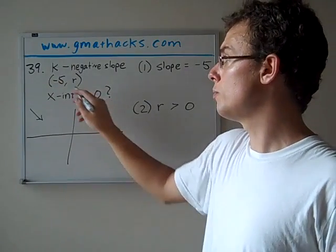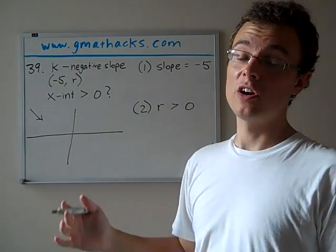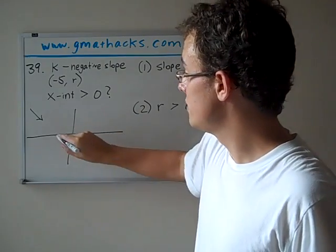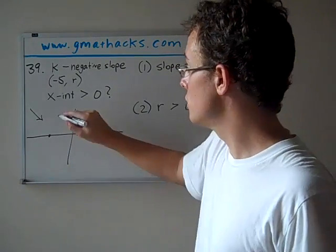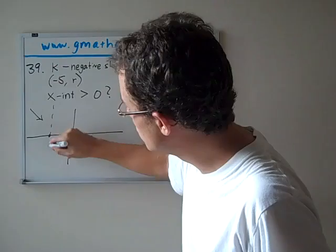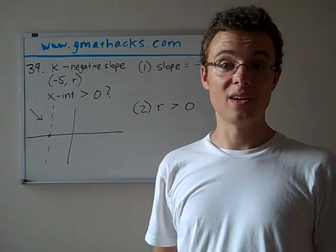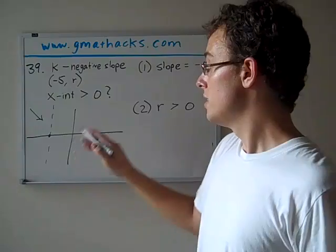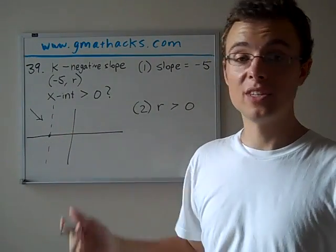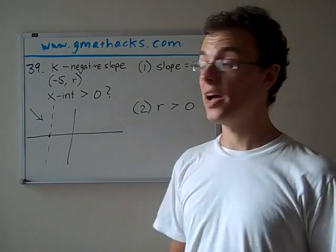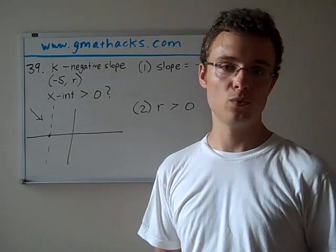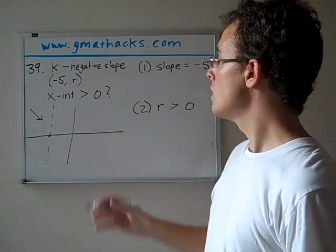We know that it passes through the point (-5, r). Now that's not giving us very much information. All it means is that at negative 5, let's say that's right here, it passes through that dotted line somewhere. Well, that's not much information because virtually every line passes through negative 5 somewhere, unless it's a completely vertical line. So we might be able to use that eventually, but knowing that it passes through there somewhere really doesn't tell us very much.